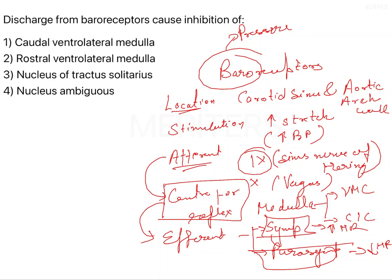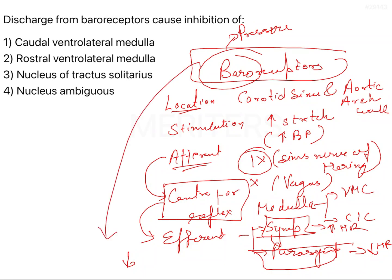The sympathetic system increases heart rate and the parasympathetic decreases heart rate. Since there is an increase in BP triggering the reflex, the main response when baroreceptors are stimulated is a decrease in blood pressure. Baroreceptors stimulation causes decreased BP — that is the main function. It can also lead to a decrease in ventilation, which is a secondary function.